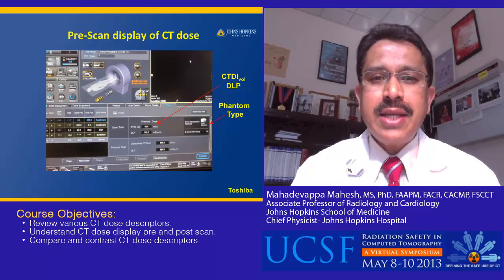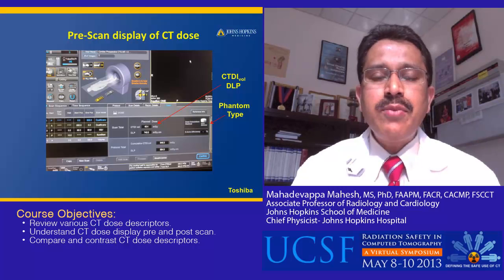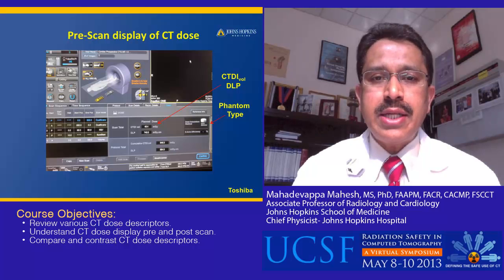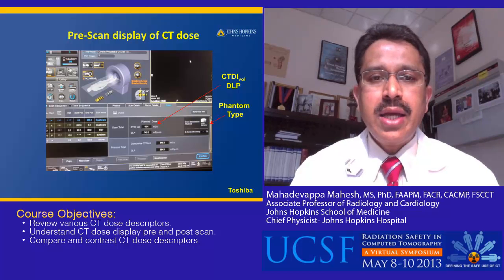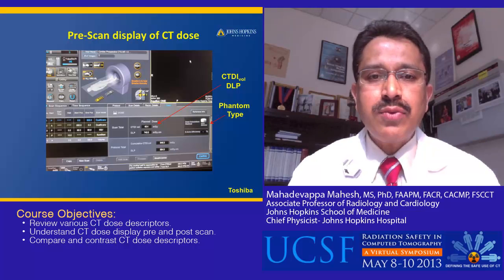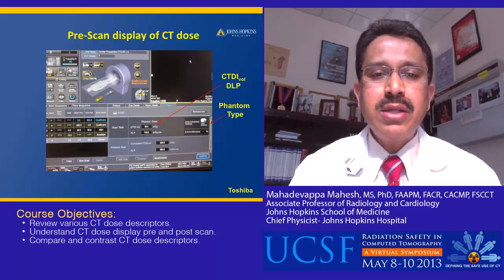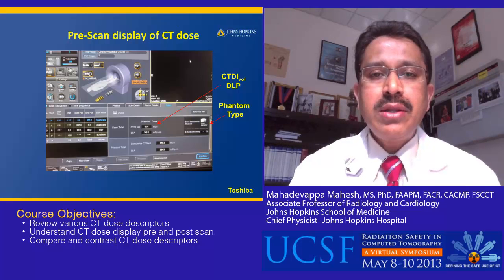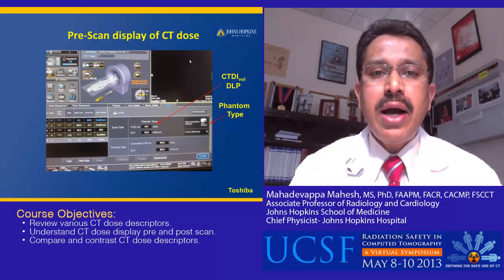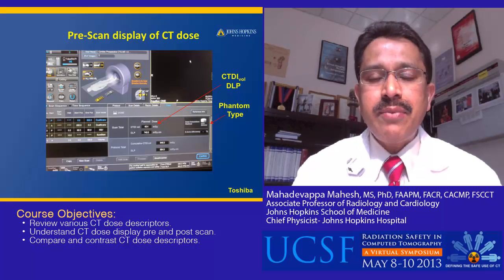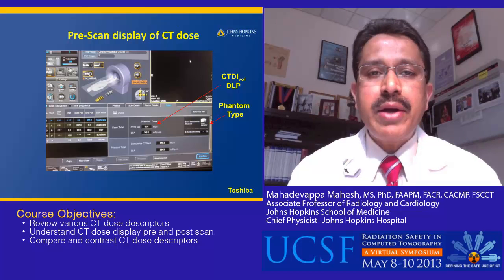This slide shows a pre-scan display from a different manufacturer. Along with the CTDIvol, there is also a planned DLP displayed on this screen. The use of a pre-scan display is that for a technologist setting up a scan, if he or she knows the general range of the CTDIvol for a particular CT protocol, they can indirectly verify whether the technique is correct. If the technique is accidentally changed — such as the kV, mA, or pitch value — this will immediately be reflected as a very high or low CTDIvol.